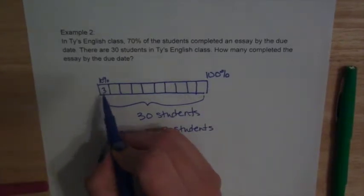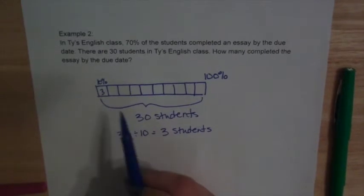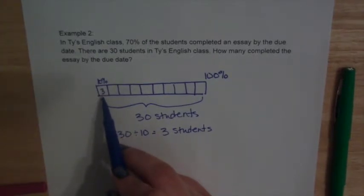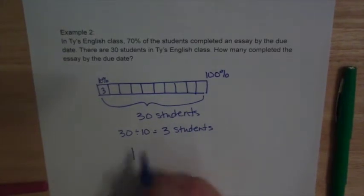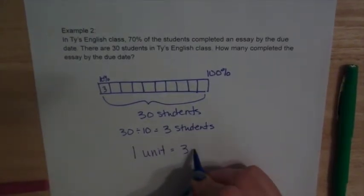So I know that each one of these boxes represents 3 students. Alright, so these boxes we call units, because it doesn't matter if it's centimeters, or meters, or inches, or feet, or percents, or whatever we're talking about. We can just call it a unit. So we're going to say 1 unit is 3 students.